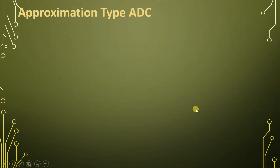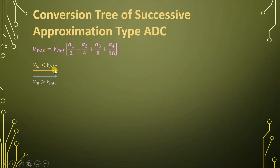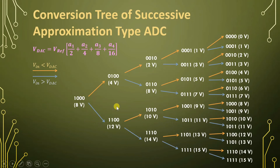Let us see the conversion tree. VDAC = V_reference × (formula). If VIN is greater than VDAC we show it in blue color; if VIN is less than VDAC we show it in orange color. This is the conversion tree. After four clocks, digital data is generated after the fourth clock, since the resolution is 4 bits.